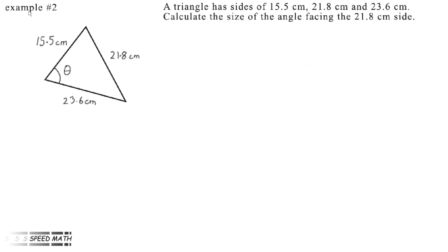Example number two. A triangle has sides of 15.5 cm, 21.8 cm, and 23.6 cm. Calculate the size of the angle facing the 21.8 cm side. And here's our diagram: the 15.5 cm side, 21.8 cm side, 23.6 cm side. Our angle theta and the opposite side 21.8 cm, we need to find angle theta.